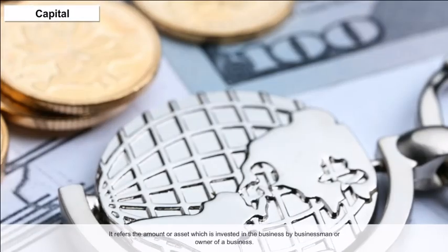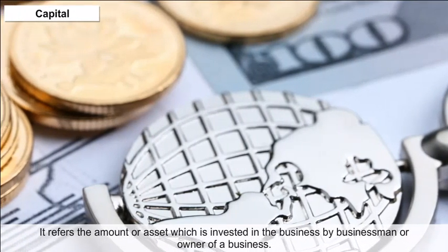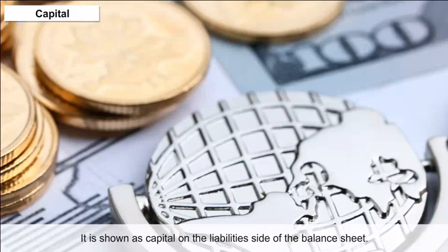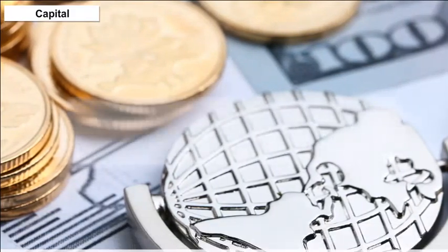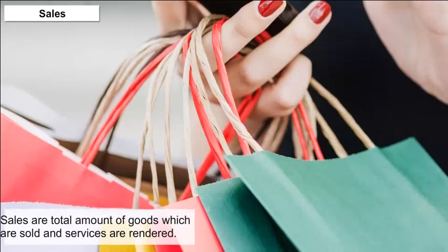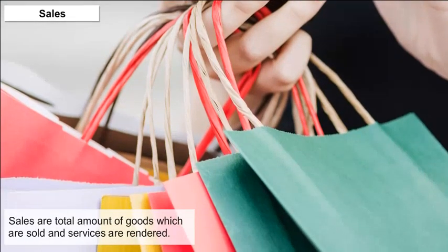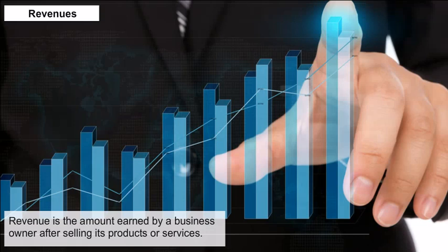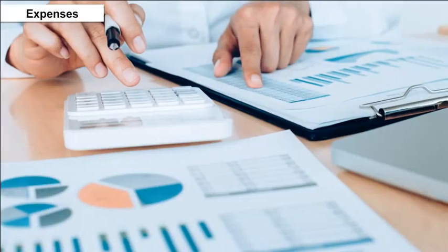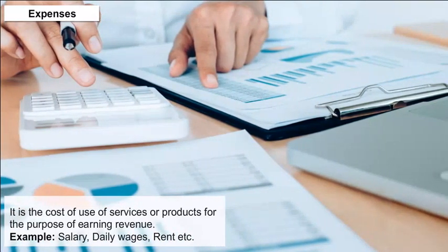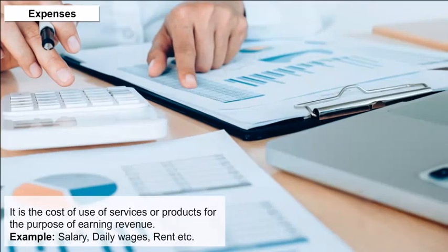Key Terms — Capital, Sales, Revenue, and Expenses: Capital refers to the amount or assets invested in the business by the owner; it is shown on the liability side of the balance sheet, where capital equals assets minus liabilities. Sales are the total amount of goods sold and services rendered. Revenue is the amount earned by a business owner after selling products or services. Expenses are the cost of using services or products to earn revenues; examples include salary, daily wages, and rent.